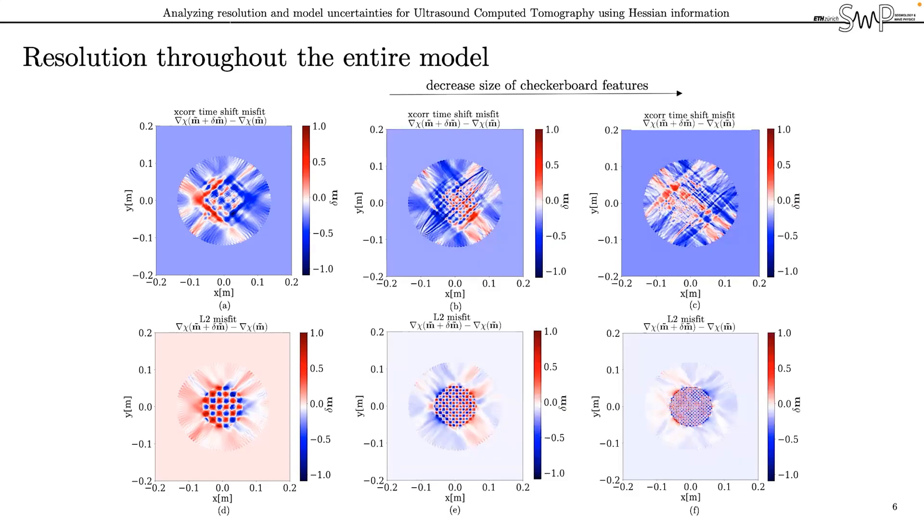Decreasing the size of the checkerboard pattern makes the reconstruction of individual features harder and indeed we observe that the resolution in case of a cross correlation misfit completely breaks down in contrast to the L2 result where even the small pattern is still recovered.